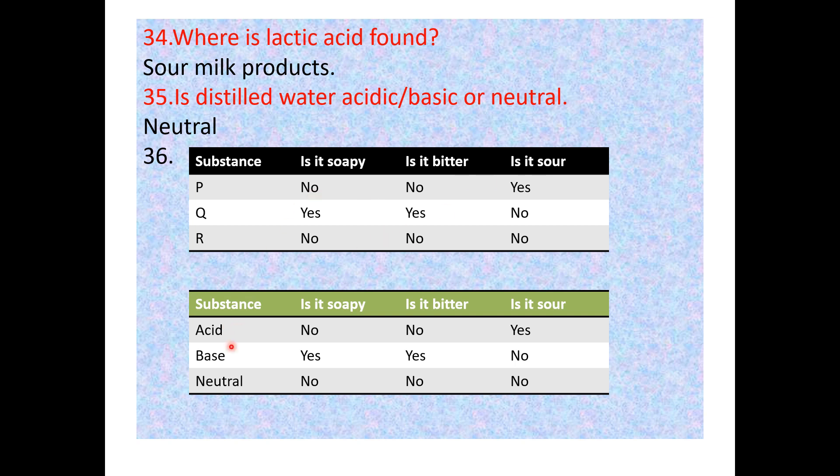Substance Q is a base — it is soapy as well as bitter. Substance R is neutral — it is not soapy, not bitter, and not sour. That's why it is neutral.